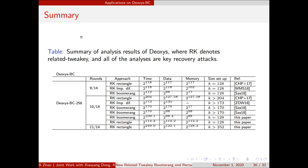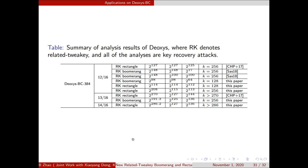Here is the summary of the analysis results of Dioxys BC. The RK denotes related-tweakey and all the analyses are key recovery attacks. We can see we gave the 10-round attack on Dioxys BC-256 with lower complexity, and gave the 11 related-tweakey rectangle attack on it for the first time. For Dioxys BC-384, we gave the 12 and 13 round attacks with lower complexity, and gave the 14-round related-tweakey rectangle attack for the first time. Thank you.